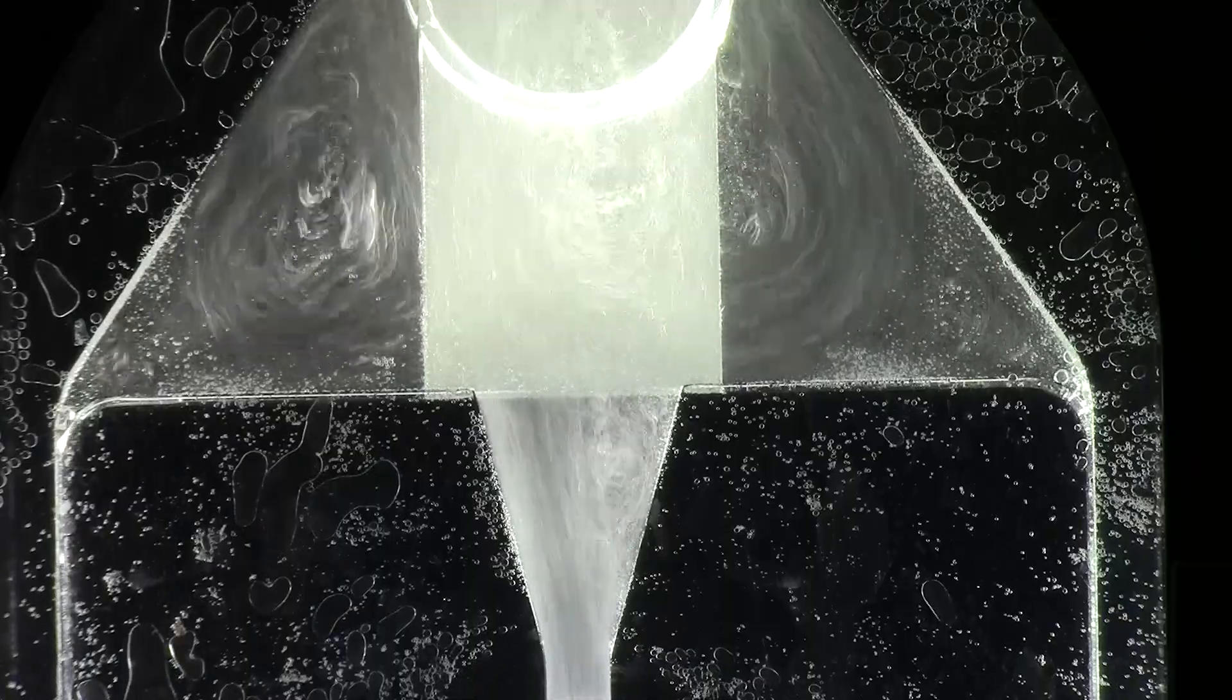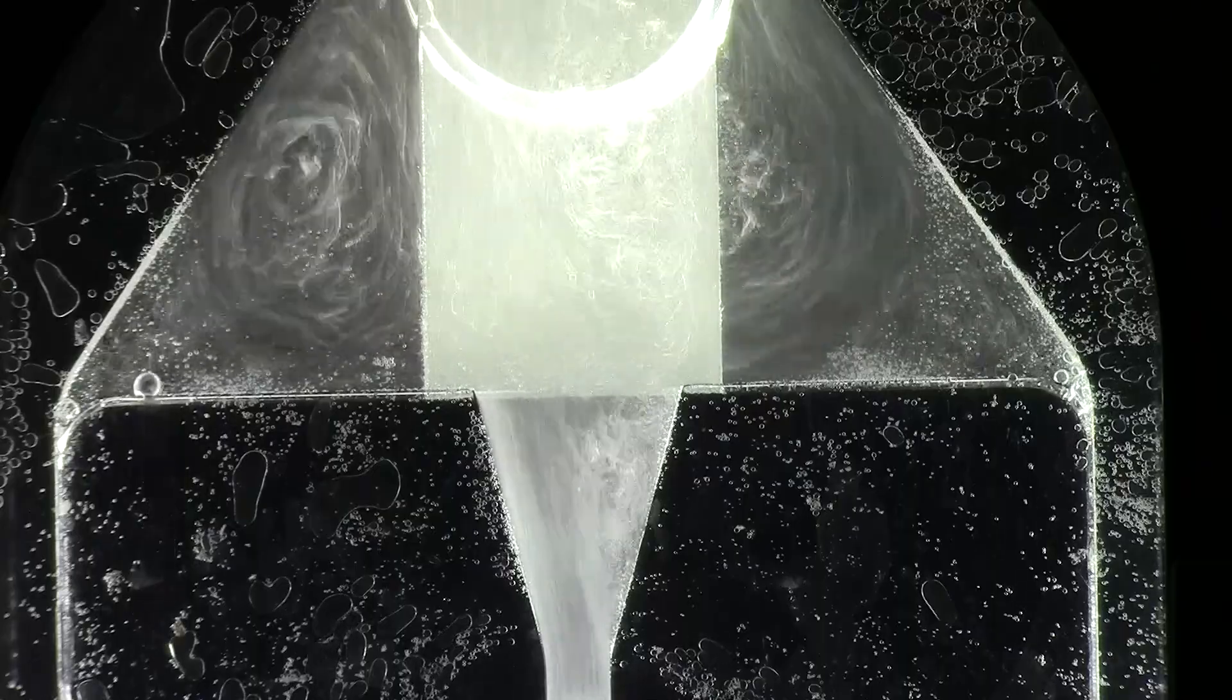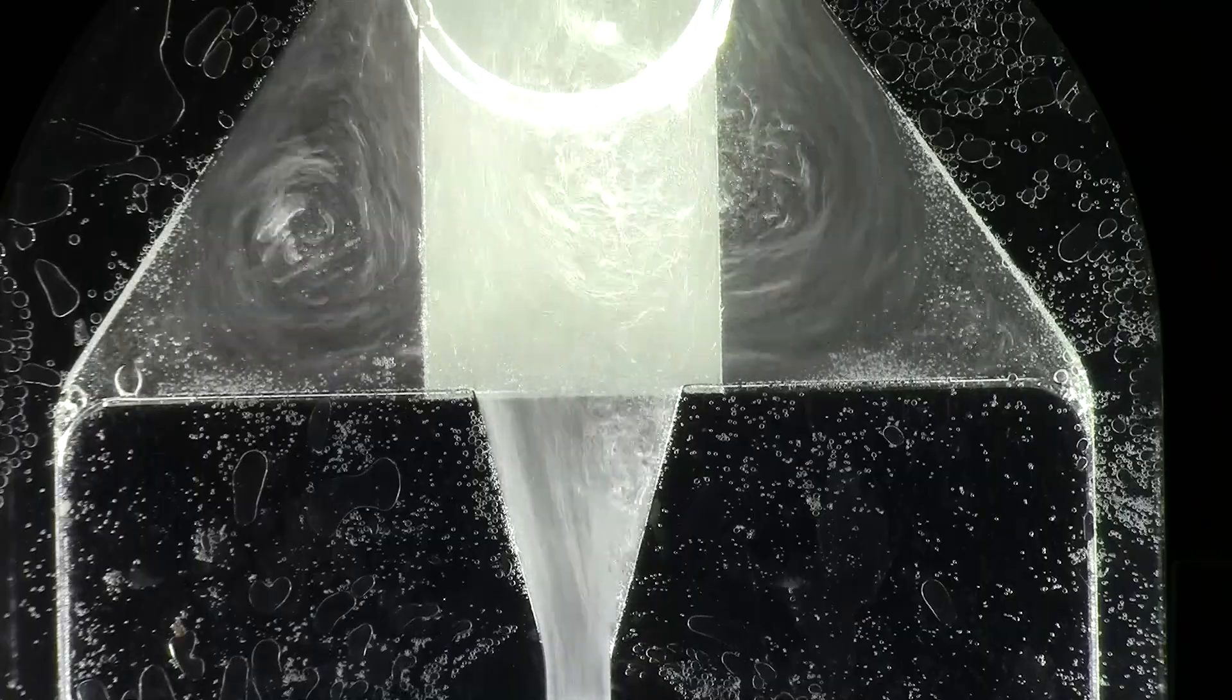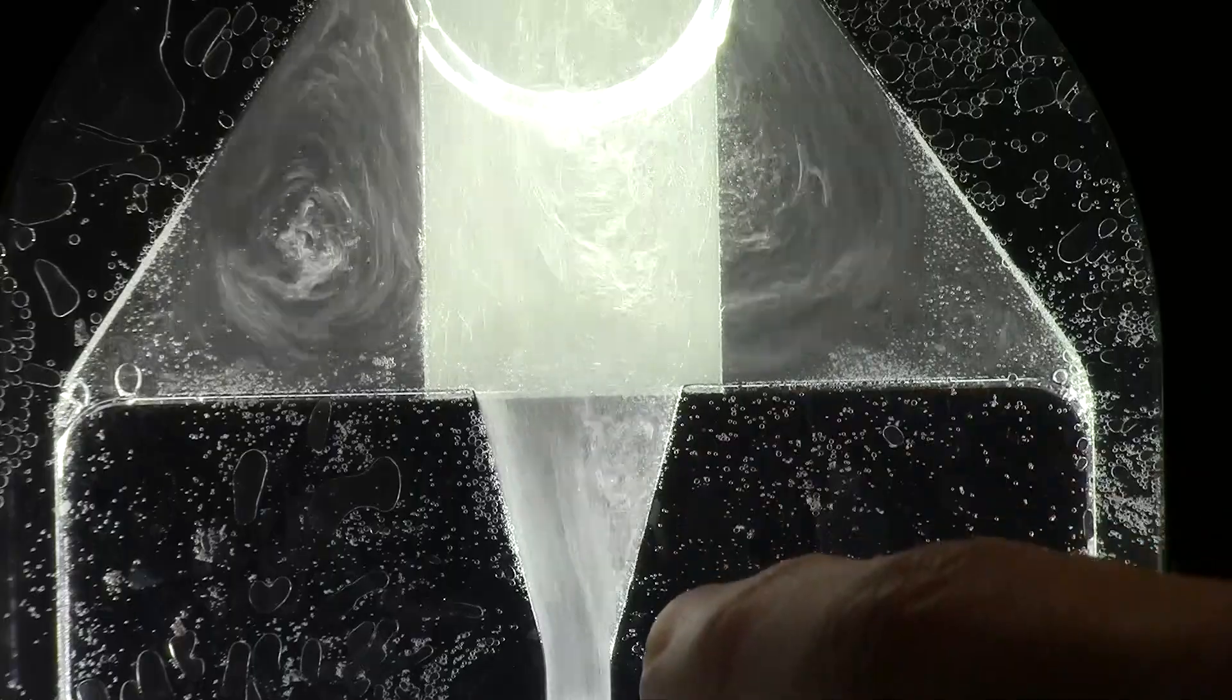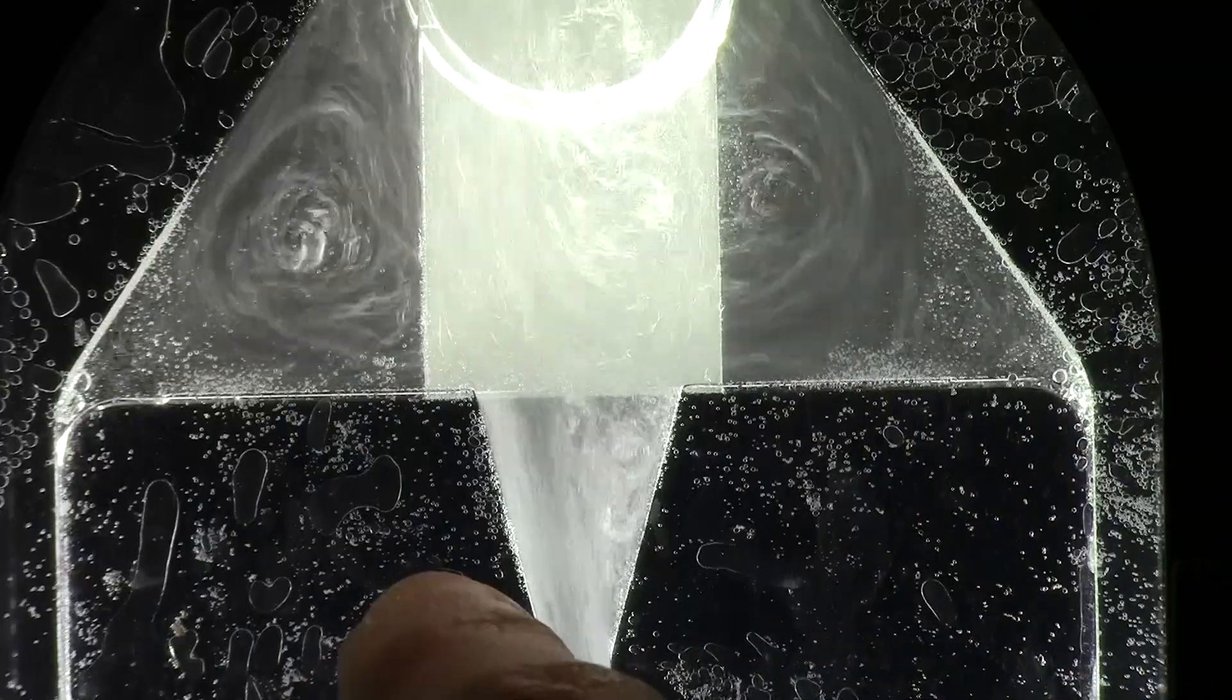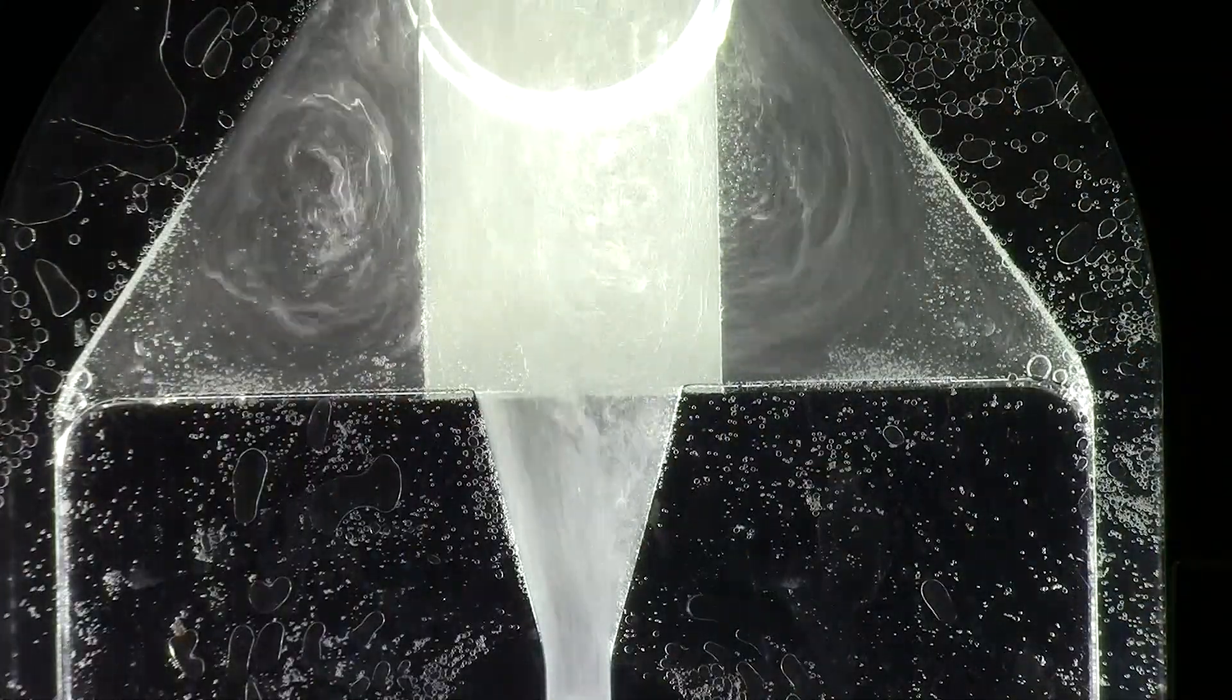We can also see that right at the exit of the Venturi itself, the flow is detached from the left wall but it stays attached to the right wall. I'm talking about this area here - we have separation and the flow is circulating on the left wall, but on the right the flow is actually attached to the wall. It doesn't separate. Why is that?